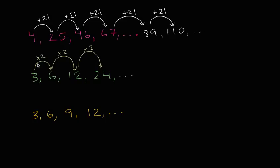So the pattern here, it's not adding a fixed amount, it's multiplying each number by a certain amount, by two in this case, to get the next number. So three times two is six, six times two is 12, 12 times two is 24.